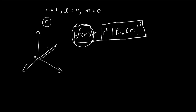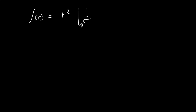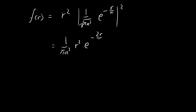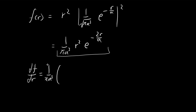Let's take f of r and substitute in the expression for R₁₀. R₁₀ is just equal to 1 over the square root of π a³, times e to the power of negative r over a. We can look this up in the book. All we have to do is square this — this term is the probability density function. Now what we need to do is maximize this. In order to maximize this, we take the derivative and look for stationary points. These constants I'm just going to pull out, and then to differentiate, I'm going to use the product rule.